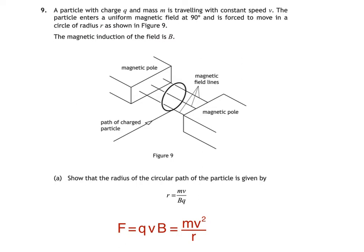All we have to do is combine the two equations, then rearrange making r the subject. Now we have v squared in the top line of our new equation and v in the bottom line, so we can simplify further in order to get the required equation. And there we have it.